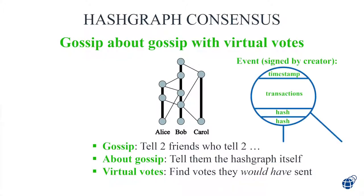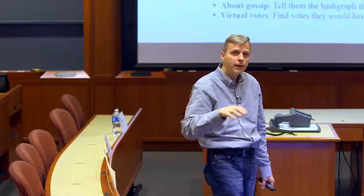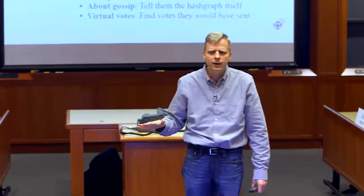One of these circles has transactions in it, a timestamp, it's signed by its creator, and has the two hashes. And even those can be compressed because I'm always sending you the hash of an object you already have in memory, and you don't have very many objects in memory, so it doesn't take much to tell you what hash I'm thinking of. Hashgraph works by gossip about gossip with virtual voting. It's bizarre — this gossip about gossip thing is weirdly self-referential.